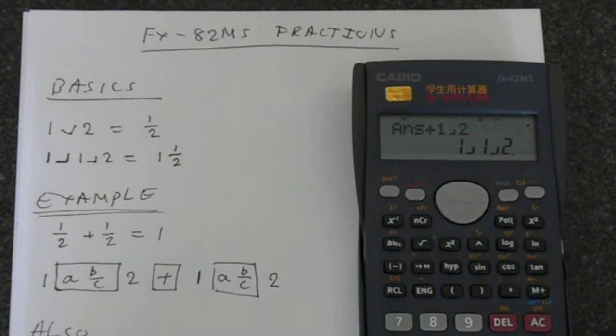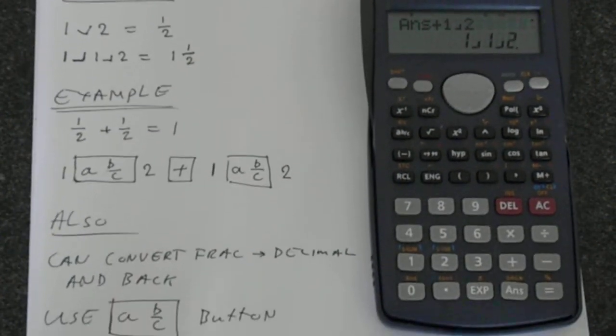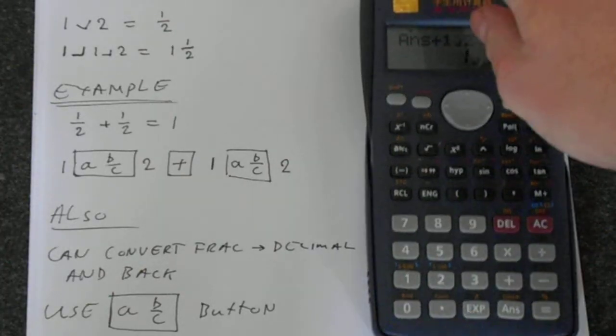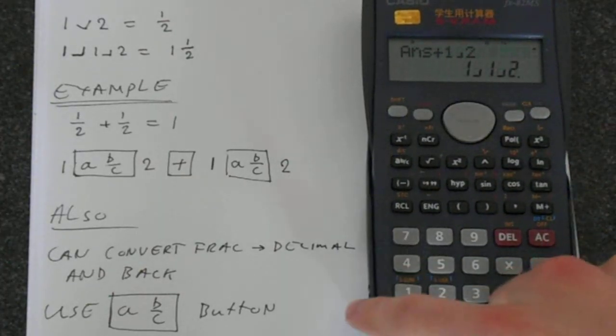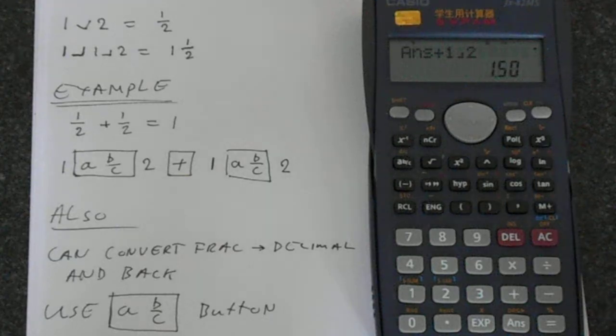You can convert this back and forth between decimals. You just use this A B over C button. So if we press that, we get 1.5. One and a half is of course 1.5.